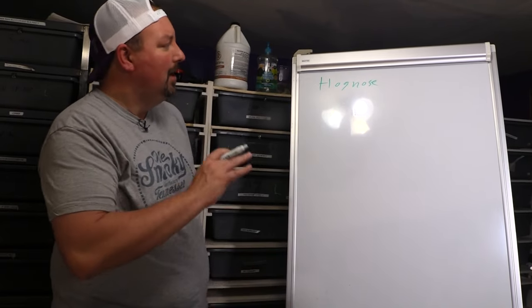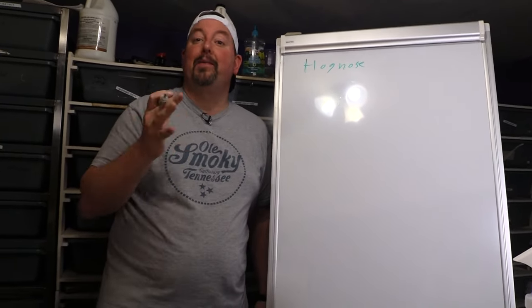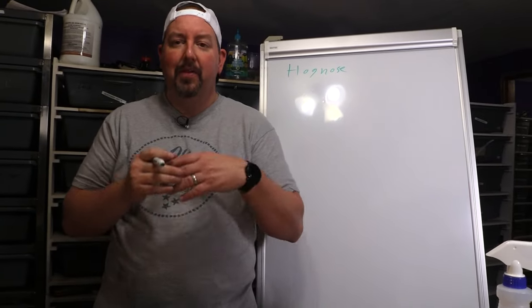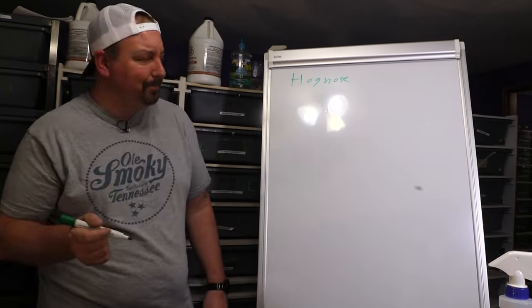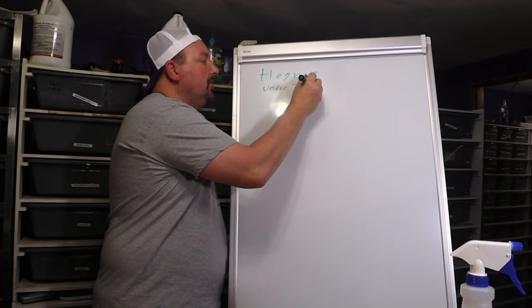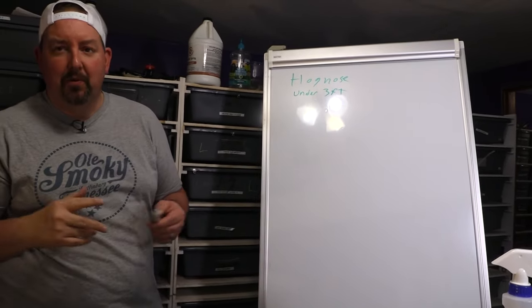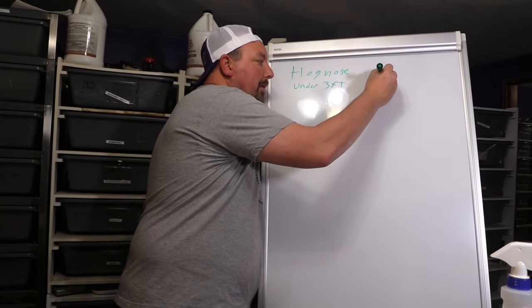What does the hognose bring to the table? Ball pythons are frequently praised for their perfect size. Well, hognose are small—these things are going to be under three feet typically. It's not uncommon to have adults around 25 to 34 inches. Their weight is going to be about a pound.